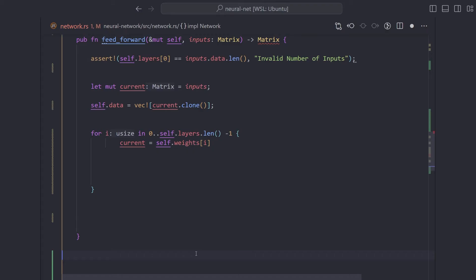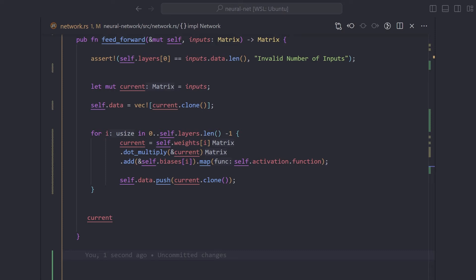Next, we iterate over all layers in our neural network. Then we apply the feed forward algorithm: multiply the weights and inputs, add them to the biases, and then map our activation function. Finally, we return our variable current, which at this point holds the output to our network.